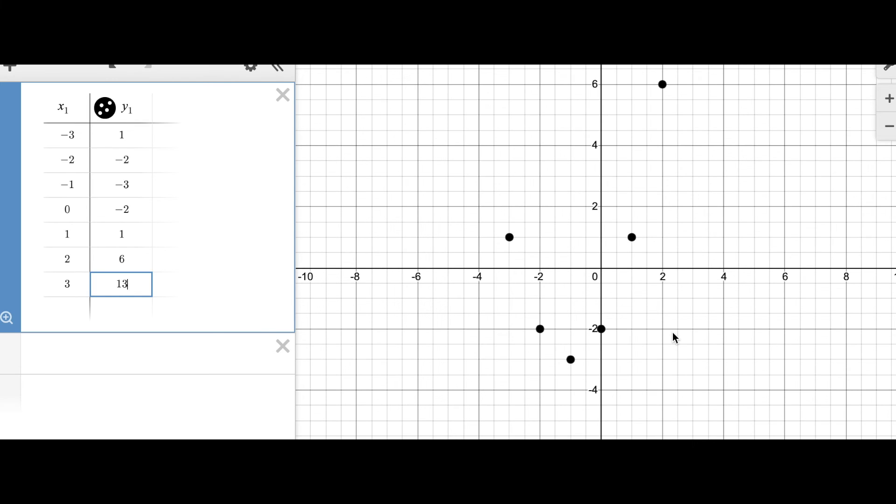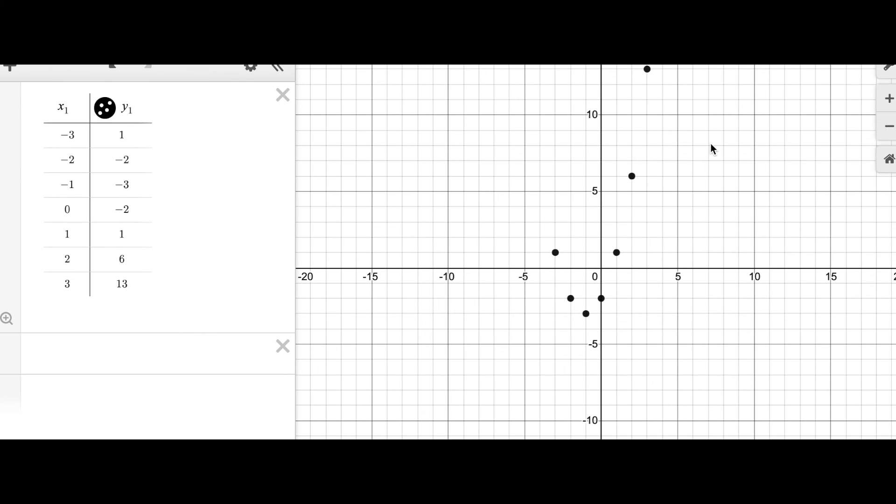Now, if you can't see all the coordinates, in this case you cannot, you can always zoom out. Just press this right here and you can zoom out and see all the different coordinates on there. If you're doing this by hand, all I want you to do is just draw a curve that goes through them.